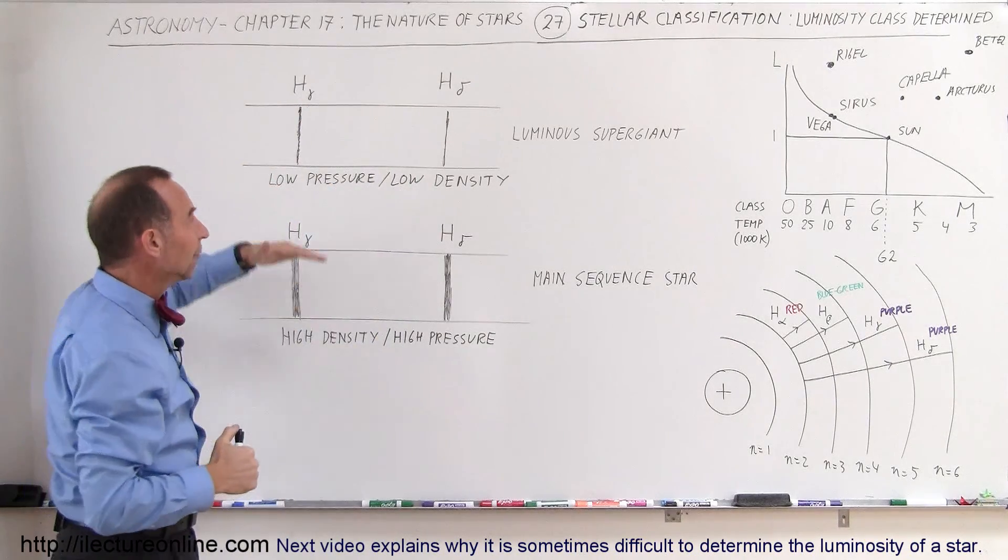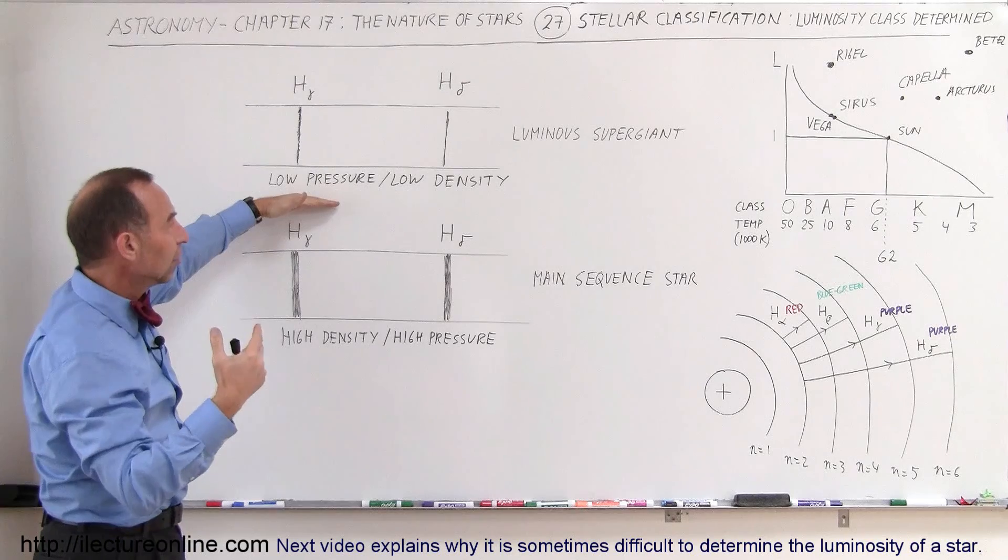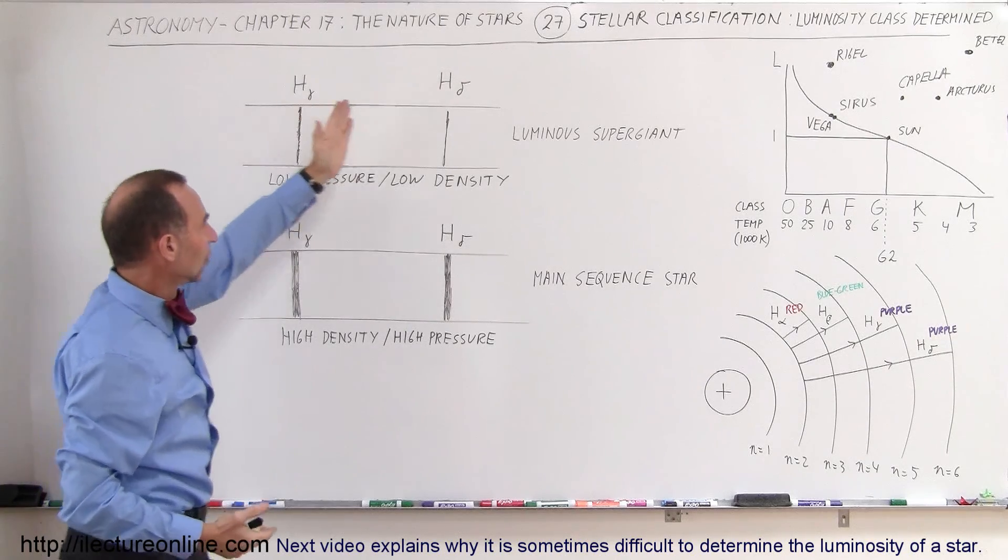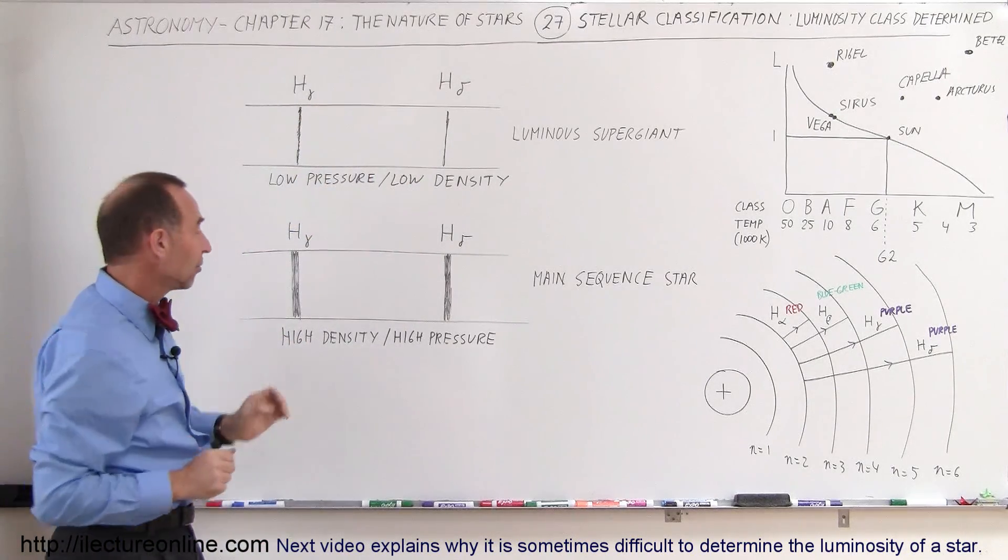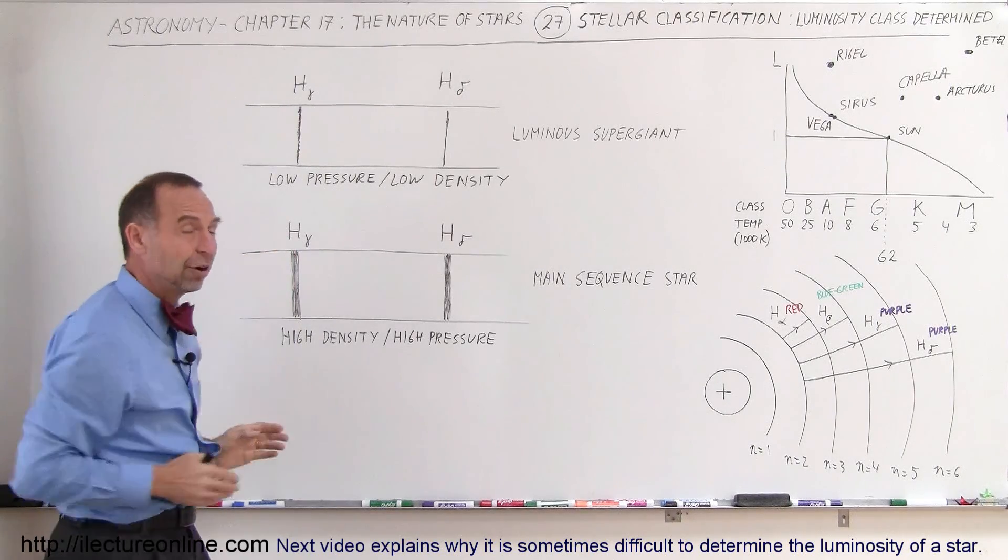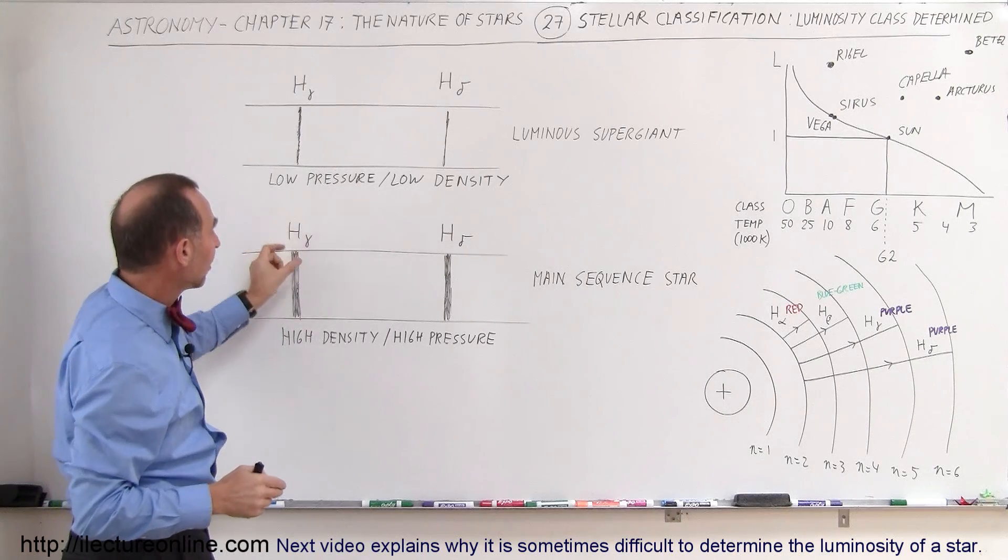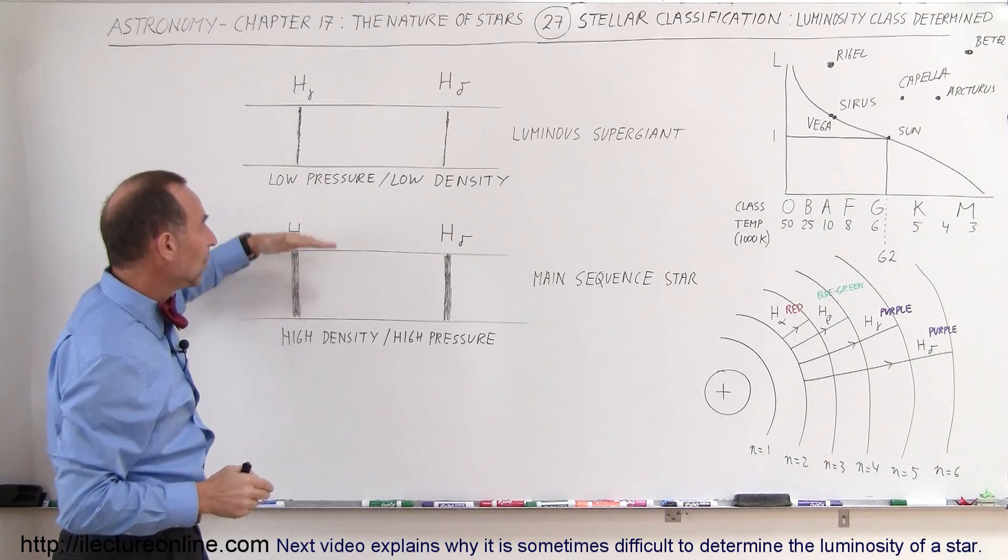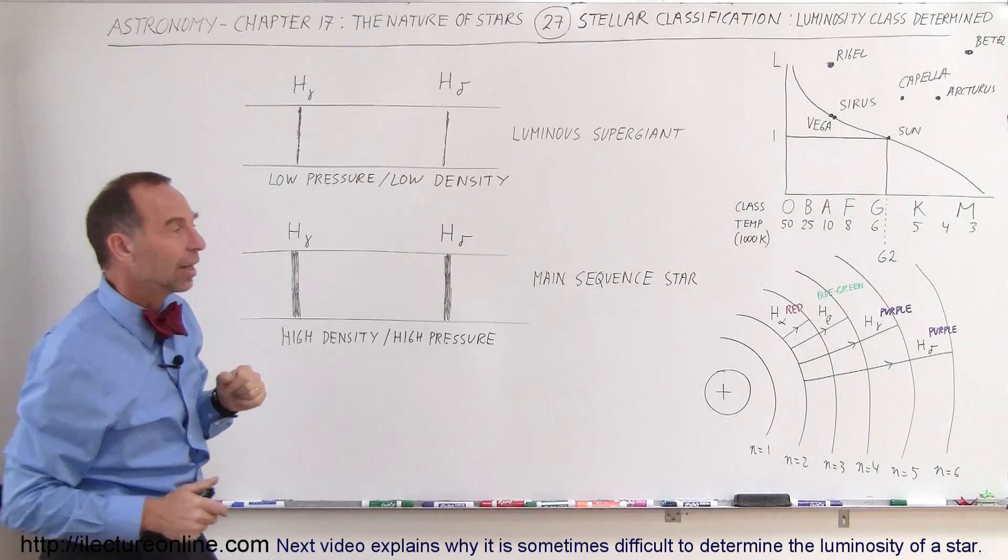But for the giants and supergiants, those missing lines are very thin and tenuous, they're not very pronounced. For main sequence stars, they're very thick and very pronounced, for stars of the very same color. So as the lines become thinner and thinner, we can then imagine that these are higher and higher luminosity classes.